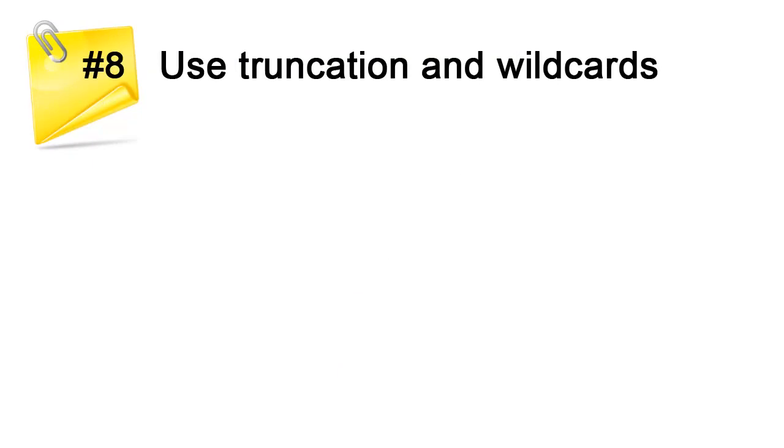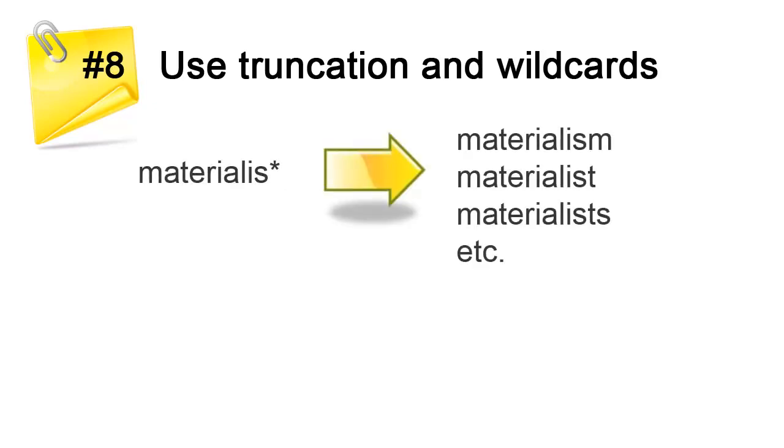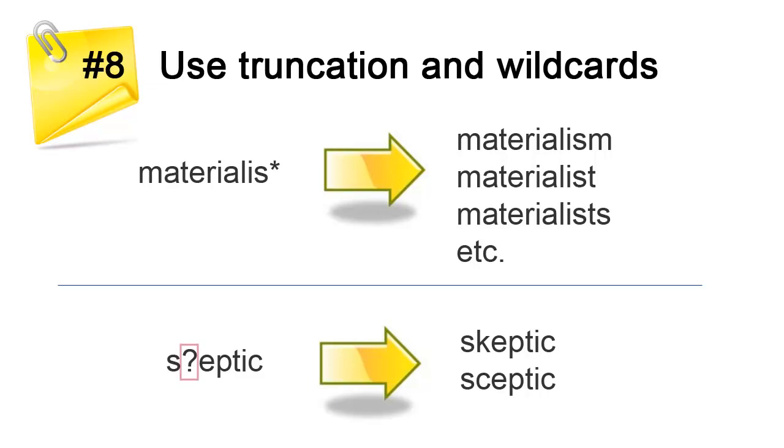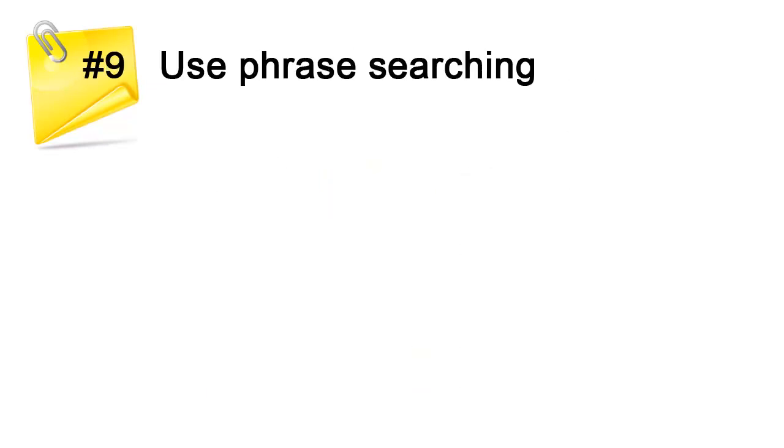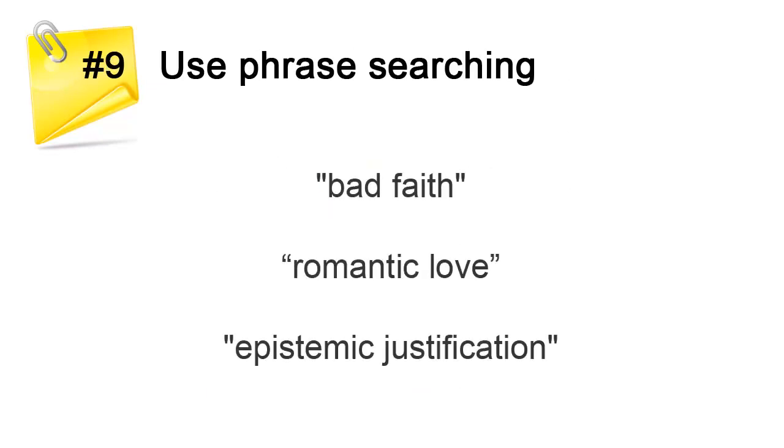Here are some useful search techniques. A truncation symbol, usually an asterisk, will broaden your search to include plurals and various word endings. Put it at the end of a word stem. For example, materialist with an asterisk will find materialism, materialist, materialists. You can also use symbols for differences in spellings. To search for both the British and the American spelling of the word sceptic, put a wildcard symbol, usually a question mark, where either character could be. Also try using quotation marks around phrases. This will ensure that the database will search for those words together as a phrase.